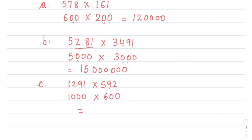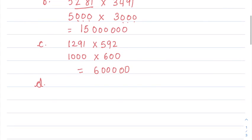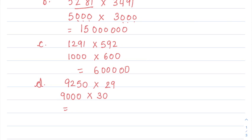So this will be closer to 900. The product works out to 9 × 3, which is 27, followed by 4 zeros, giving us 270,000 as our estimated answer.